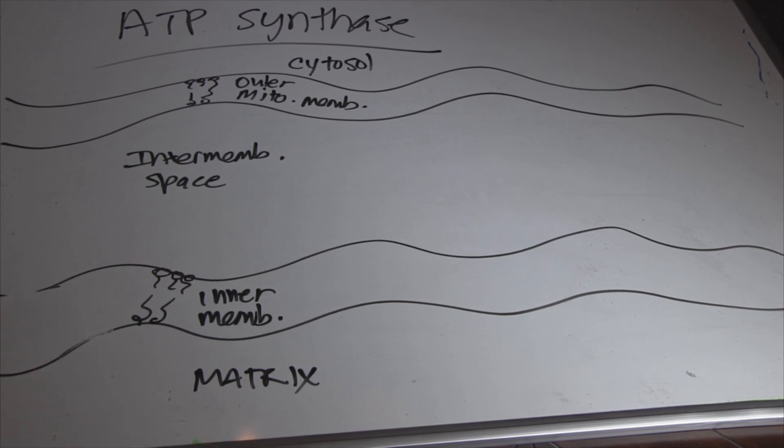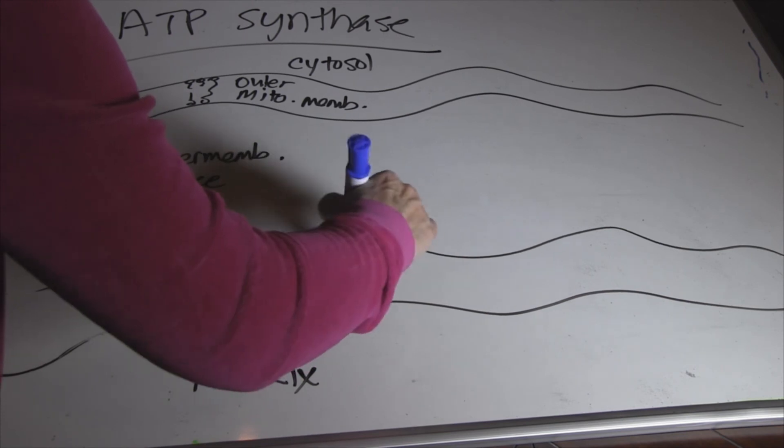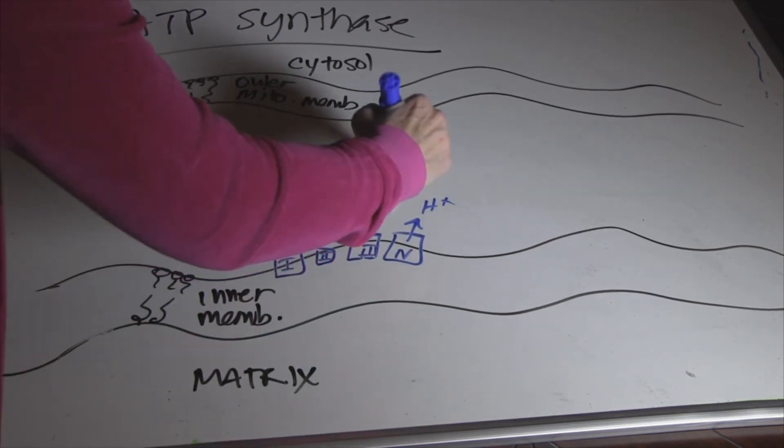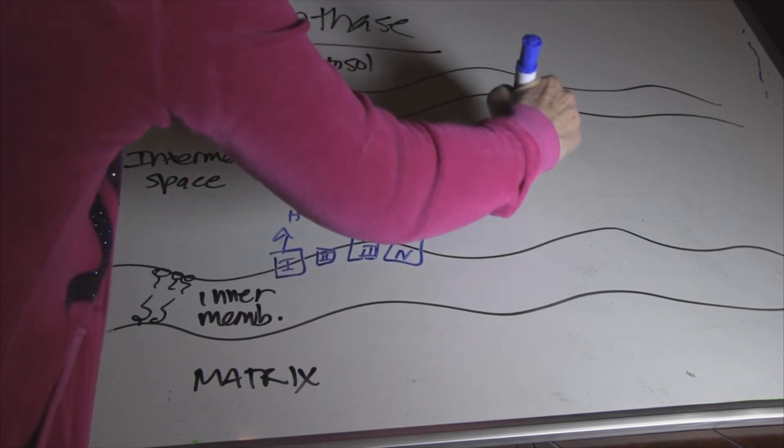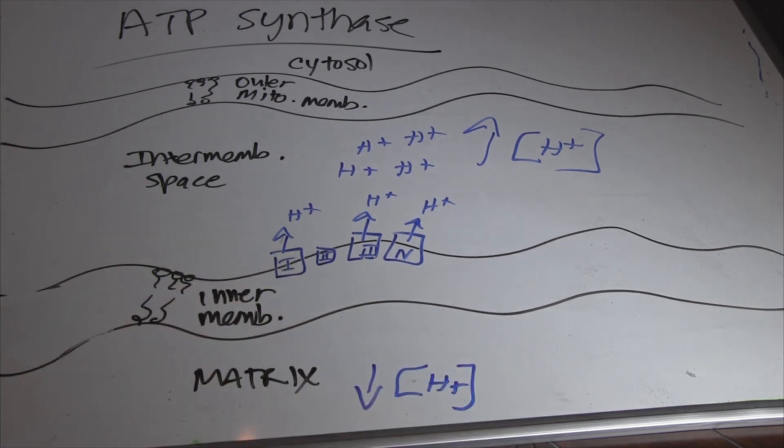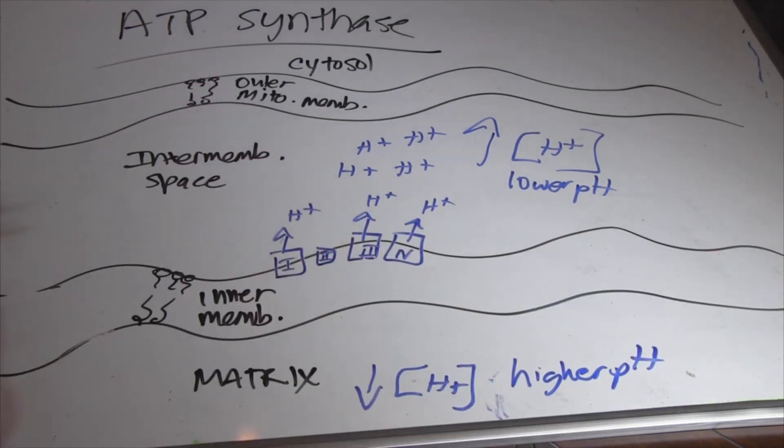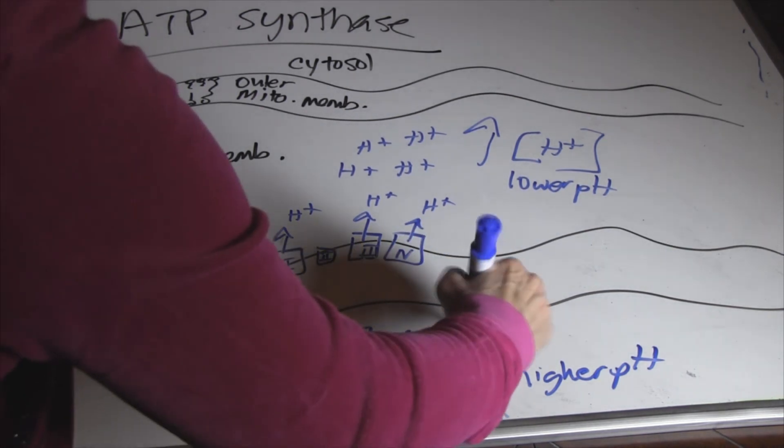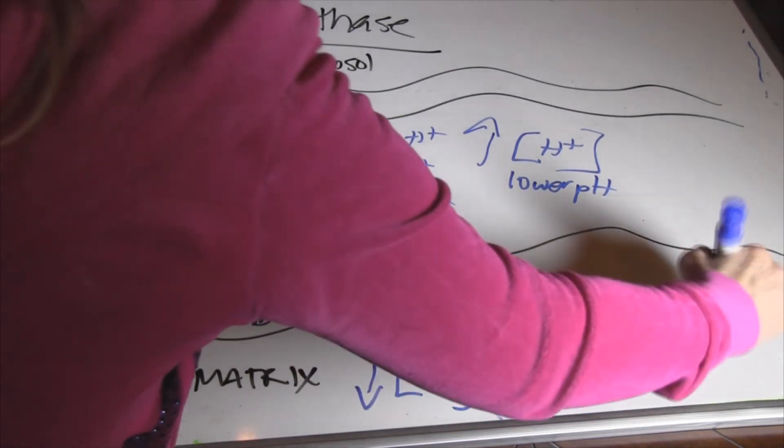So here we are in the inner membrane space. What we know from the ETS is that we had complex 1, 2, 3, 4. And what they've done, so this is 1, 2, 3, 4. And what they've done is they've pumped hydrogen ions into this inner membrane space where we have a ton of them. So we have a high concentration of hydrogen ions, and then we have a lower concentration of hydrogen ions. Therefore, this means a lower pH. So this is a pH gradient as well. And a higher pH in the matrix. So we have this electrochemical gradient. Again, this is an electrochemical gradient. And that is potential energy.